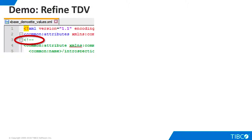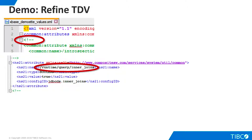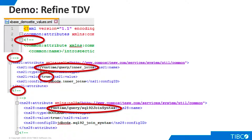As you will remember from previous demos in this series, the values.xml file created for a custom adapter is commented out by default. We'll need to uncomment the appropriate capabilities and change their value settings. For this example, there are two settings we need to change. The first one we encounter in the file is the inner joins setting. We uncomment it and set the value to true. Further down in the file, we see the SQL 92 join syntax option. Again, we uncomment it and set its value to true. We must save our edits and restart TDV.